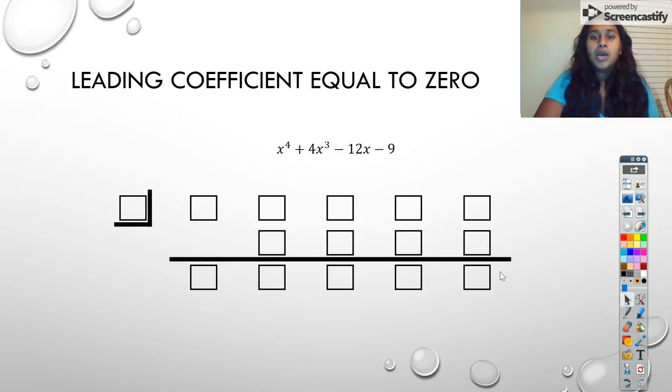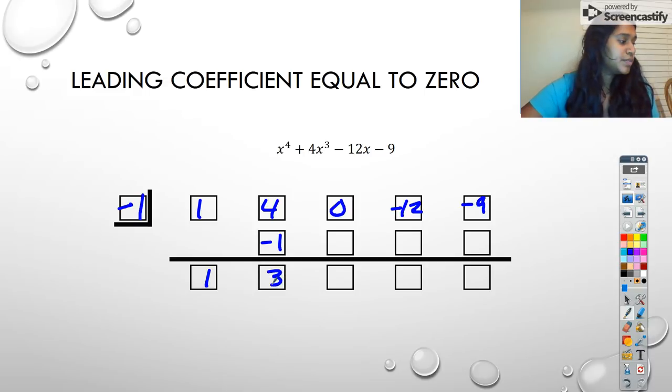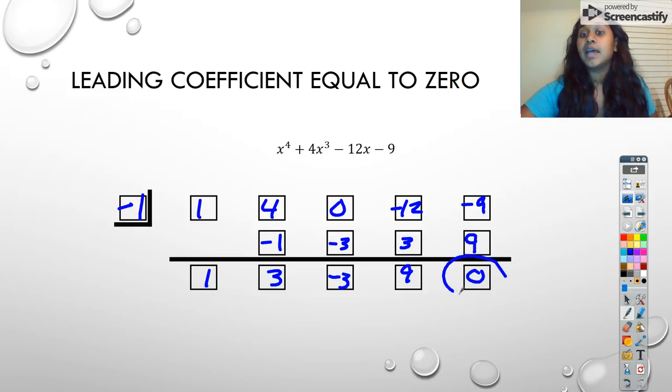Okay, so then we move on and test negative 1. Do the same thing. I bring that number down. This becomes negative 1, this becomes 3, this becomes negative 3, this is negative 3, this becomes positive 3, this is 9, this is positive 9. And now we actually do have a remainder of zero.